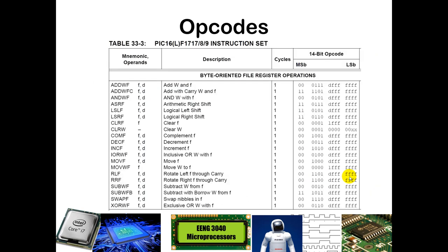Looking at byte-oriented commands, the first 6 bits in all cases indicate what the instruction is. For an ADDWF instruction, the first 6 bits are always 000111. Then the destination bit D indicates whether the result is stored into W (D=0) or back into whatever register you are adding to W (D=1). The F bits represent the address of the register you specify — so for port A, you look up port A's address and put that in for the F field.